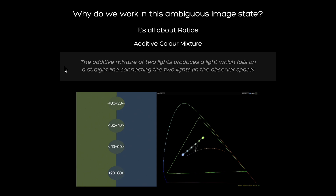Additive mixtures of two lights will produce a light which lies on a straight line connecting the two lights in the observer trichromatic space. This is, besides metamerism, the basis of trichromatic reproduction, and it plays a fundamental role in scene-referred image state too. A mixture ratio of two to eight will place the result on that connecting line — 20% away from the light that contributed 80%, and 80% away from the light that contributes 20%.